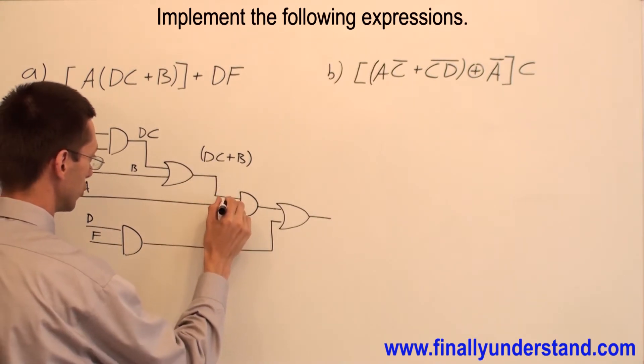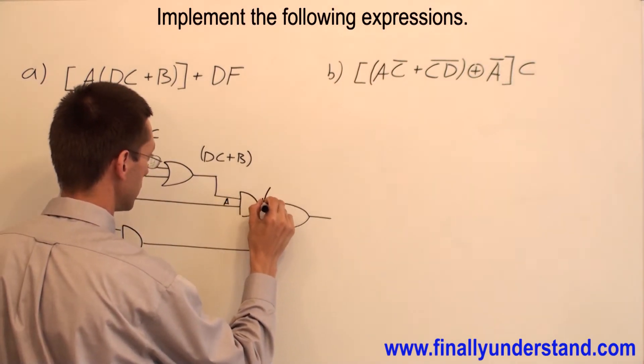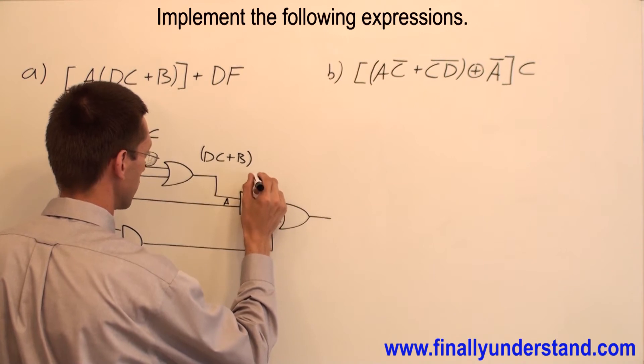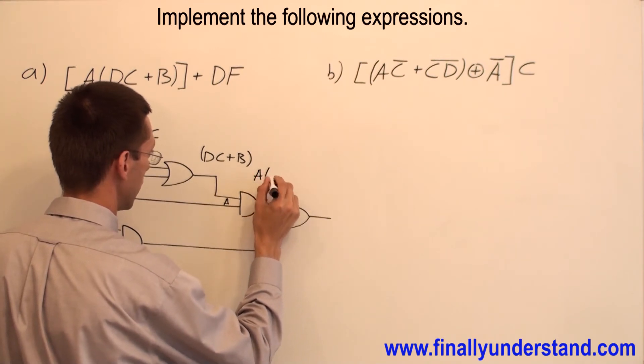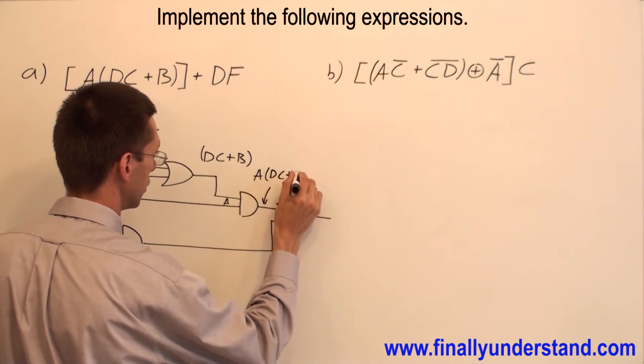The AND gate is going to receive D NAND C OR B, and also it's going to receive my A from here. So at the output of this gate, I'm going to have simply A ANDed with DC OR B.